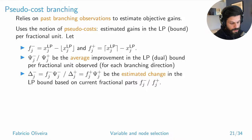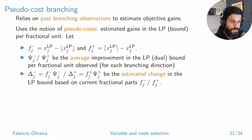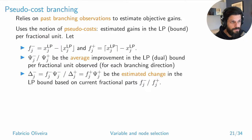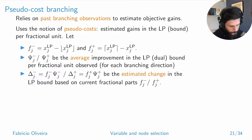The other idea is pseudo costs. Pseudo costs rely on past branching observations, which you can use to estimate the objective gains when considering the fractional part being removed when you set your branching constraints. Basically, you compute an average estimated gain in the LP per fractional unit, using f-minus and f-plus — the difference between the rounded-down and rounded-up versions of the LP value.